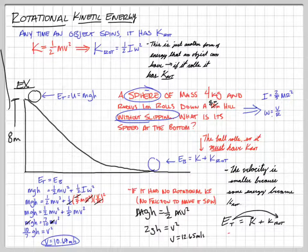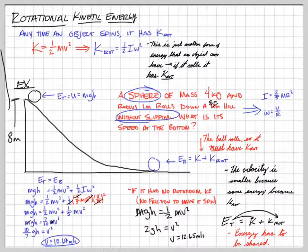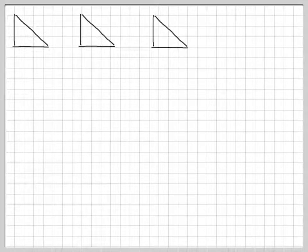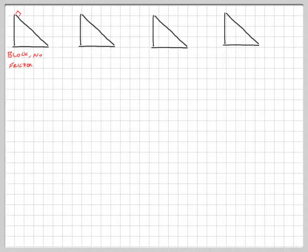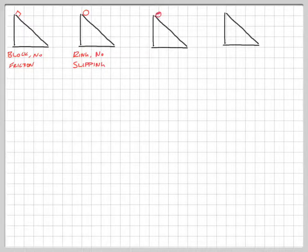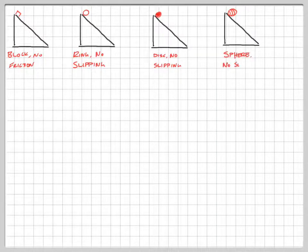Let's look at some other implications of this energy concept. The energy has to be shared, and that's why we don't go as fast. Let's say we have four different ramps with four different objects. On the first, we put a block with no friction so it slides straight down. On the second, a ring that rolls without slipping. On the third, a solid disk with no slipping. On the fourth, a sphere with no slipping. We're going to compare what happens when we release them all at the same time — I want to know who's going fastest at the bottom.